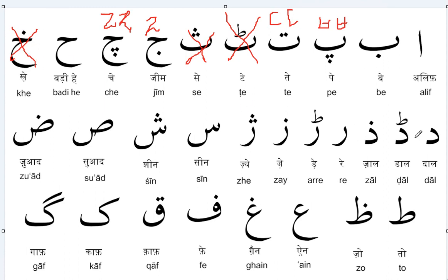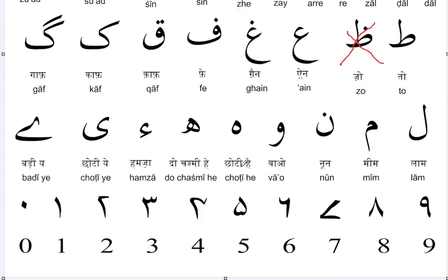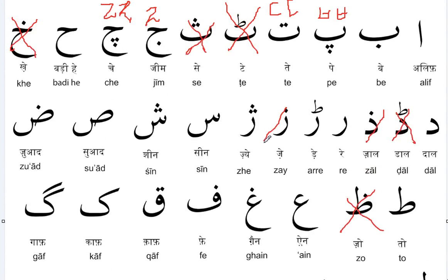This sound doesn't exist at all in Korean. Starting from Dal — Dal does exist. But Zal doesn't exist; there isn't any sound with a Z quality like Zal or Zoe in Korean. Ze also does not exist at all. Then Ray — Ray does exist. But Ze doesn't exist.